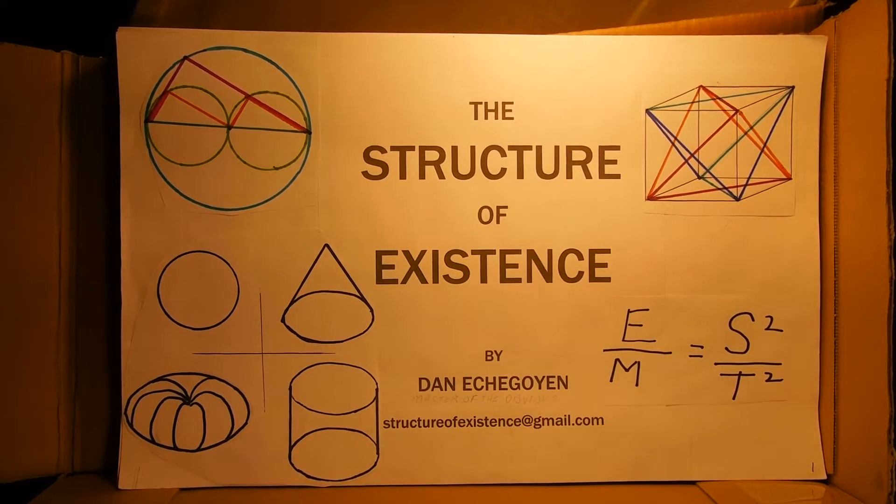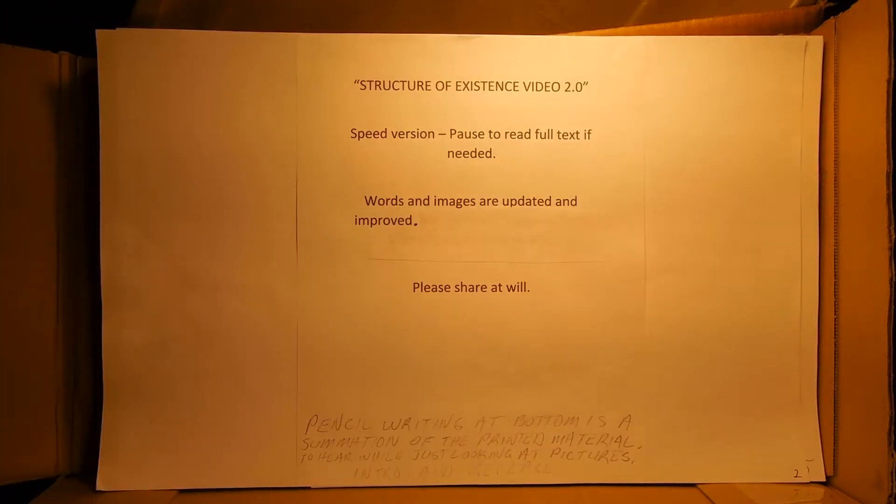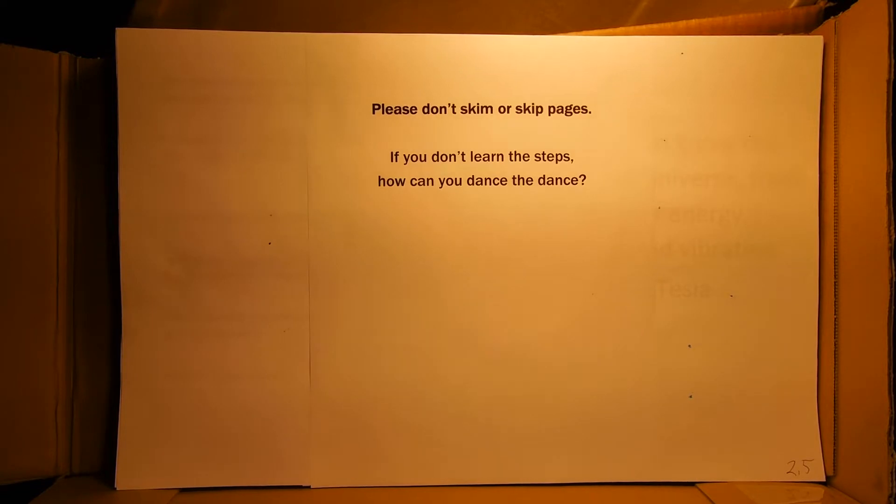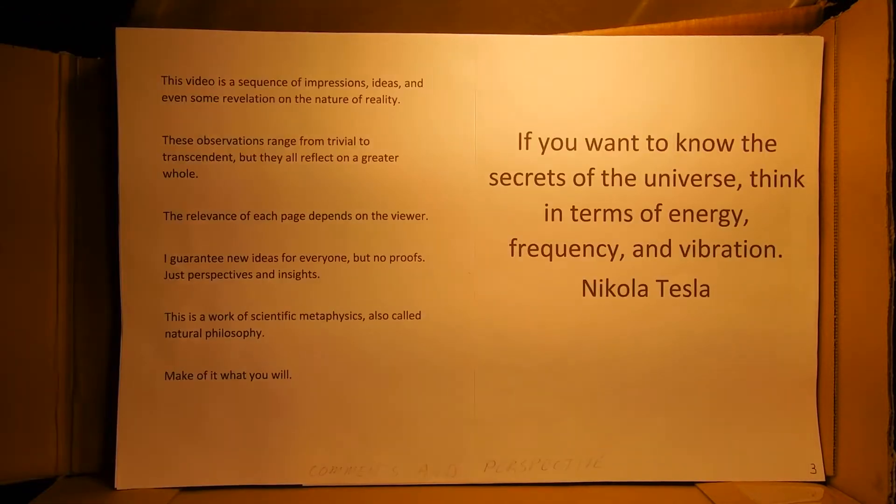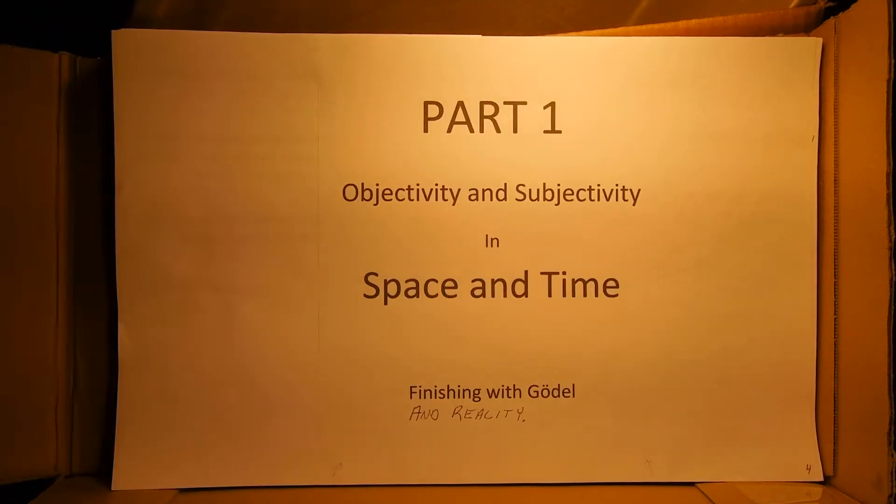The Structure of Existence by Dan Etchegoyan. This is Speed Version 2.0, Parts 1 and 2. Please pause to read and please don't skip stuff. The baby steps are here to prepare you for the leaps.